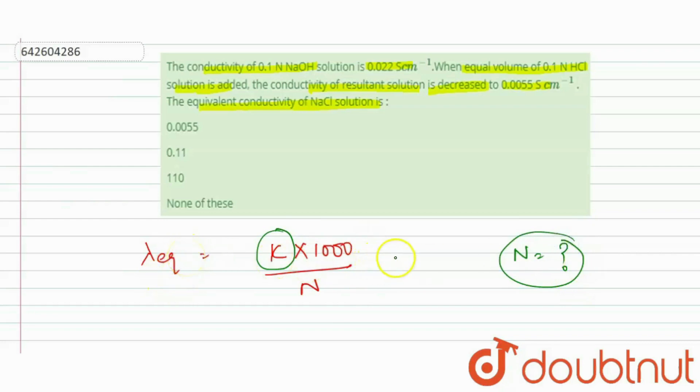What's the value of normality here? We are already given with the concentration that is 0.1. But they have told that equal volume of 0.1 normal HCl solution is added.